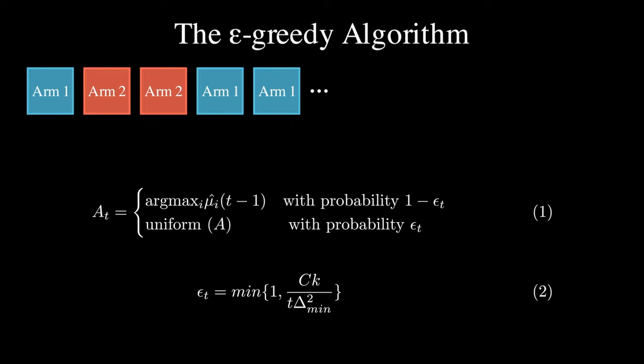To write this algorithm formally, we have action a at time t expressed as follows. It is the argmax of the empirical mean estimate with probability 1 minus epsilon, and the uniform selection of an arm with probability epsilon.